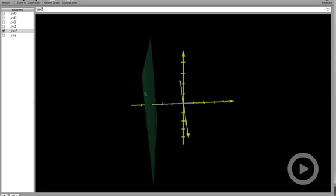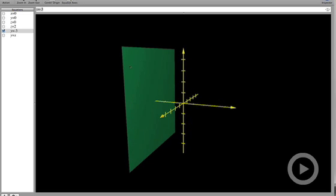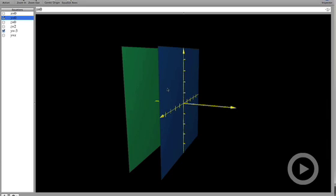Here's y equals negative three. Y equals negative three, of course, is going to be parallel to y equals zero, the xz-plane.